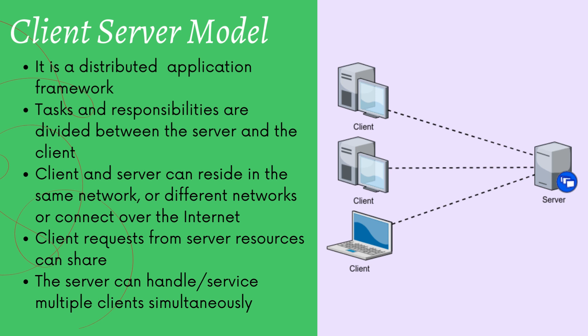For example, if you want to access files in a file server, the viewing and editing of the file is the responsibility of the client software, while saving changes without corruption is the responsibility of the server-side software. Client and server can reside in the same network, but there are no restrictions to deploy them across different networks or over the internet. This model uses a request and response structure — the client always requests and the server responds. A server can handle multiple clients simultaneously. The client-server model is the most popular computer network model, and the internet works primarily based on it.